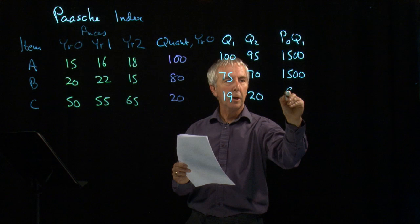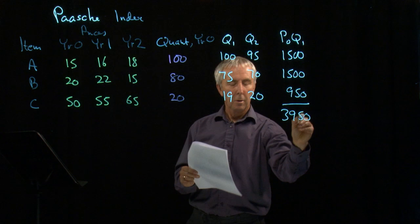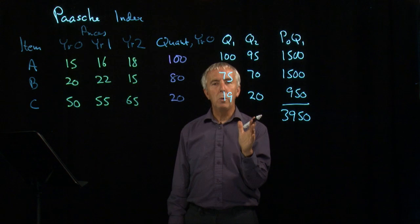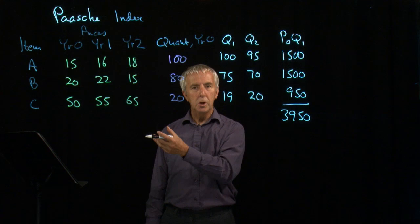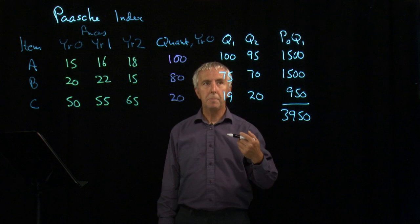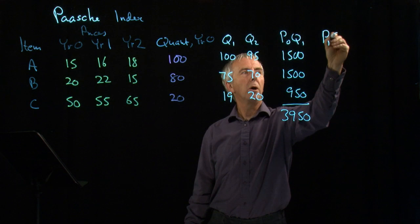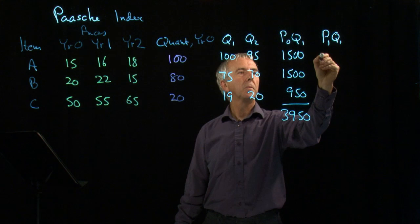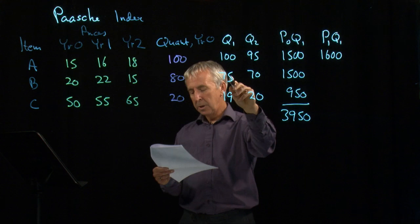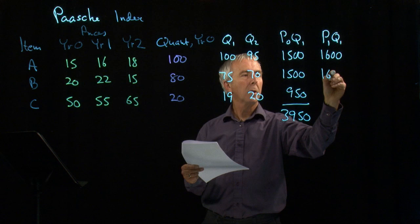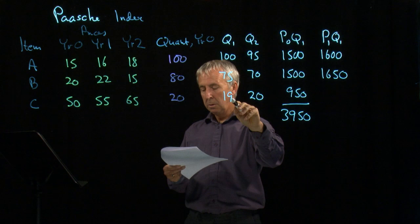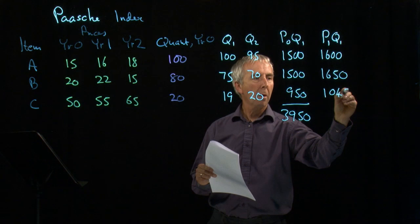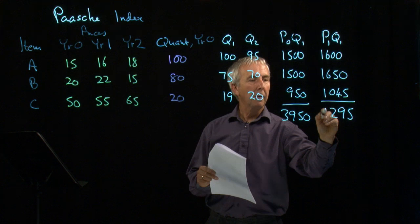That gives us a total of 3,950. That's saying that when we're in year one, if we think what the total cost of the basket would have been the previous year, if they had bought the same number of items as they are currently buying. We can now compare that with the actual prices in year one times the quantities sold in year one — so 16 times 100, 22 times 75 which is 1,650, and 55 times 19 which is 1,045 — and adding those up I get 4,295.